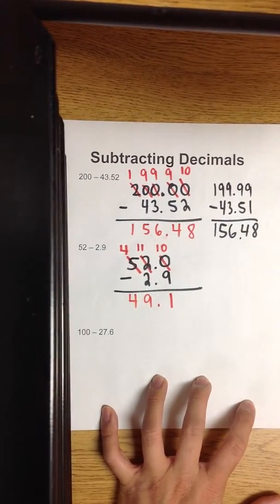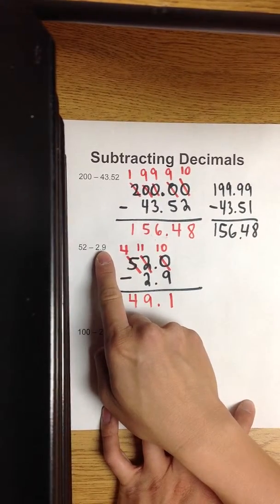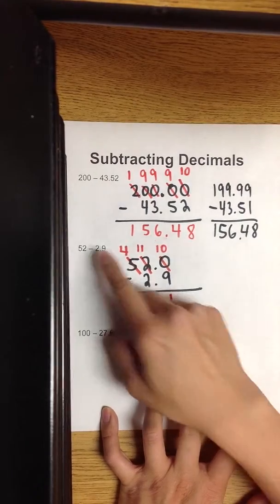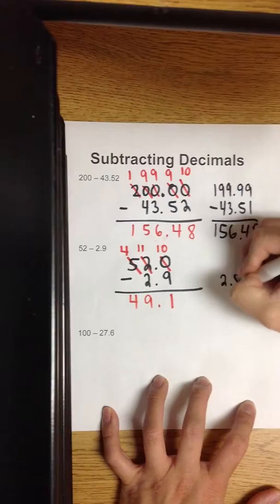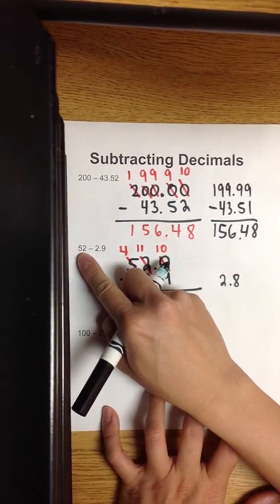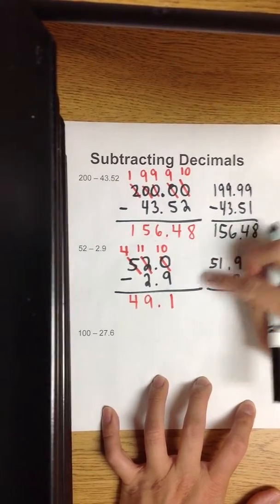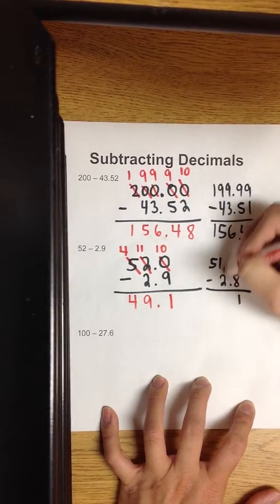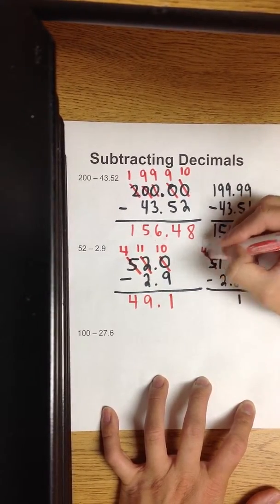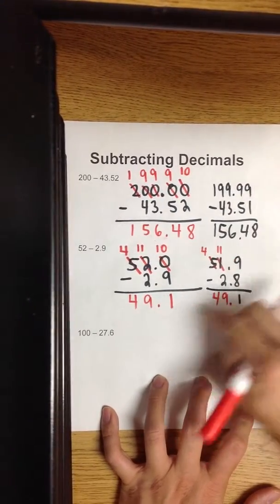So the difference is forty-nine and one tenth. For those who like shortcuts: this is in the tenths place, so I need to take away one of them. If I take away one tenth from it, that will be two and eight tenths. If I take away one tenth from this, it will be fifty-one and nine tenths. Nine minus eight is one. Got to regroup. This becomes a four, and this becomes eleven. Forty-nine and one tenth.